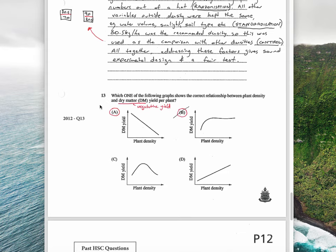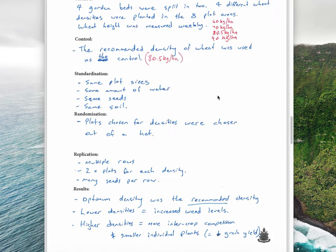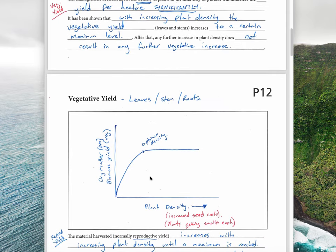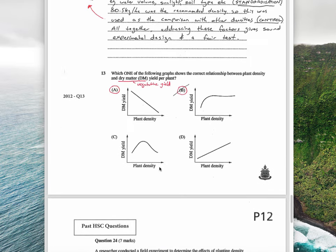This question is almost a little bit of a trick question. It's a hard question, and it's an example of needing to read the question very carefully. It says, which one of the following graphs shows the correct relationship between plant density and dry matter yield per plant? If you go off dry matter being vegetative yield, at first glance, if you don't read the question carefully, you probably think it's this one because it mostly looks like the graph we saw earlier for vegetative yields up the top.